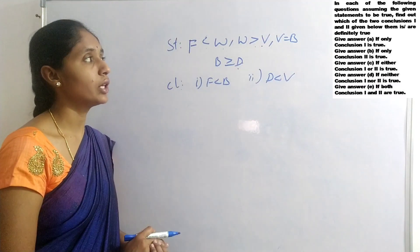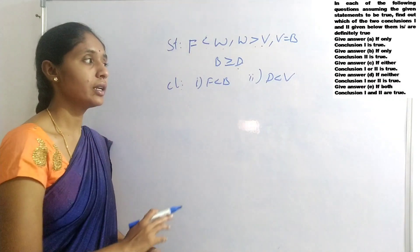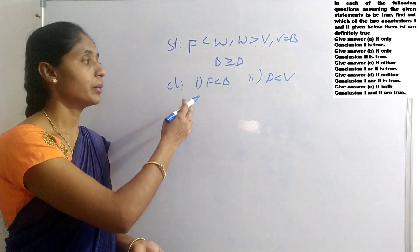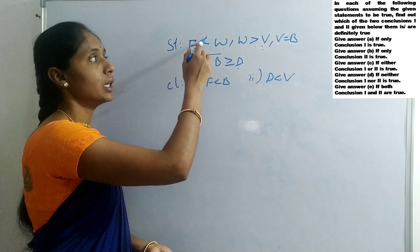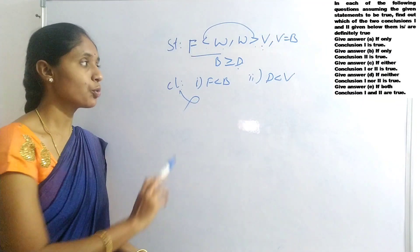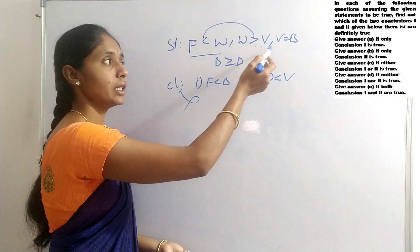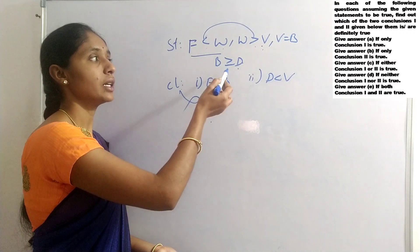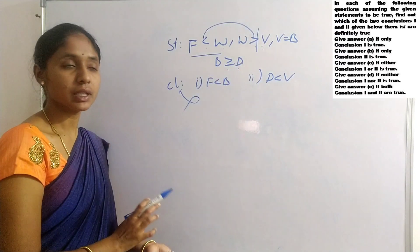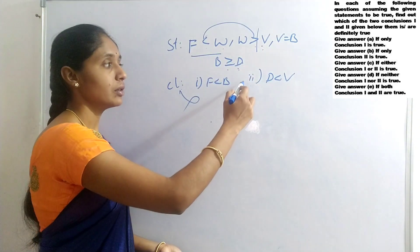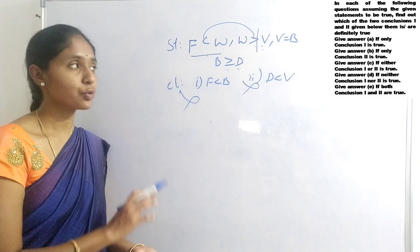Question 12: F less than W; W greater than V; V equals to B; B greater than or equals to D. Conclusions: F less than B; D less than V. For F less than B: F less than W, W greater than V, V equals to B — signs are less than and greater than — opposite, no relation. For D less than V: tracing through gives opposite signs as well — stop at the opposite sign. When opposite signs appear, no need to continue — no relation. Neither conclusion 1 nor 2 is true.